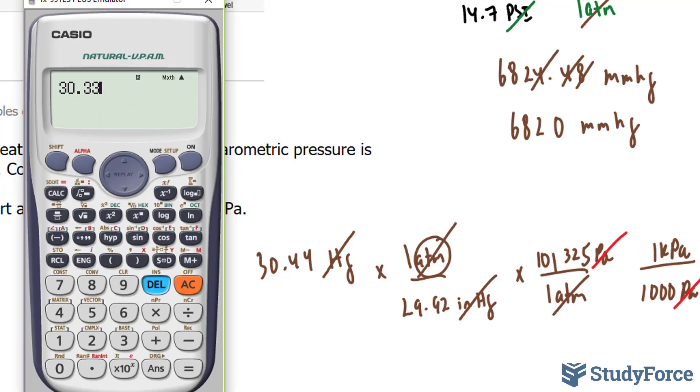We start with 30.44 times this number. I won't show the 1. It's redundant. 3, 2, 5. That gives us the number in the numerator position, divided by 29.92 times 1,000.